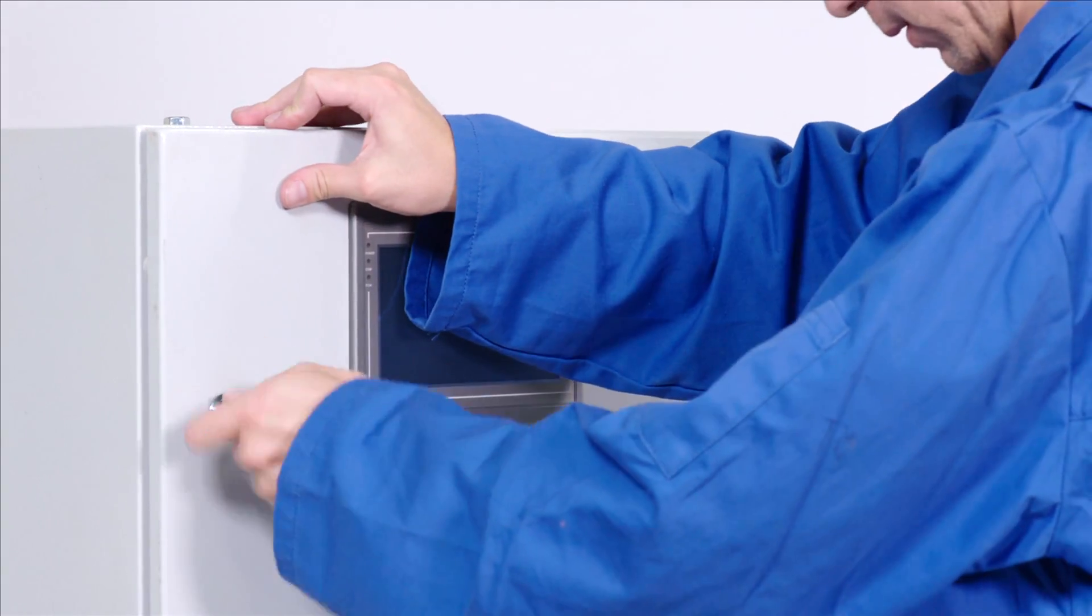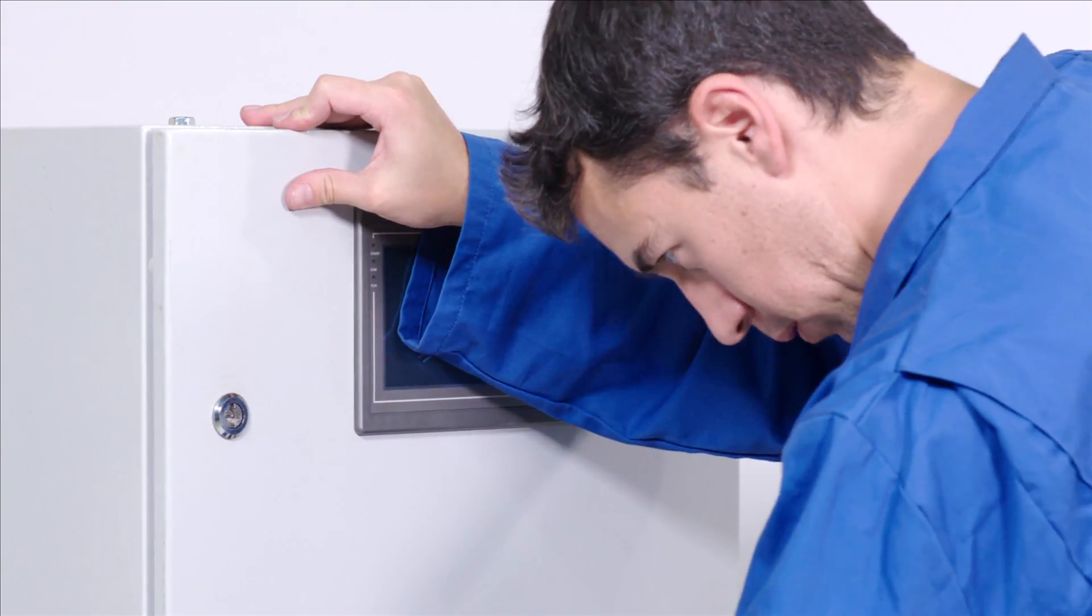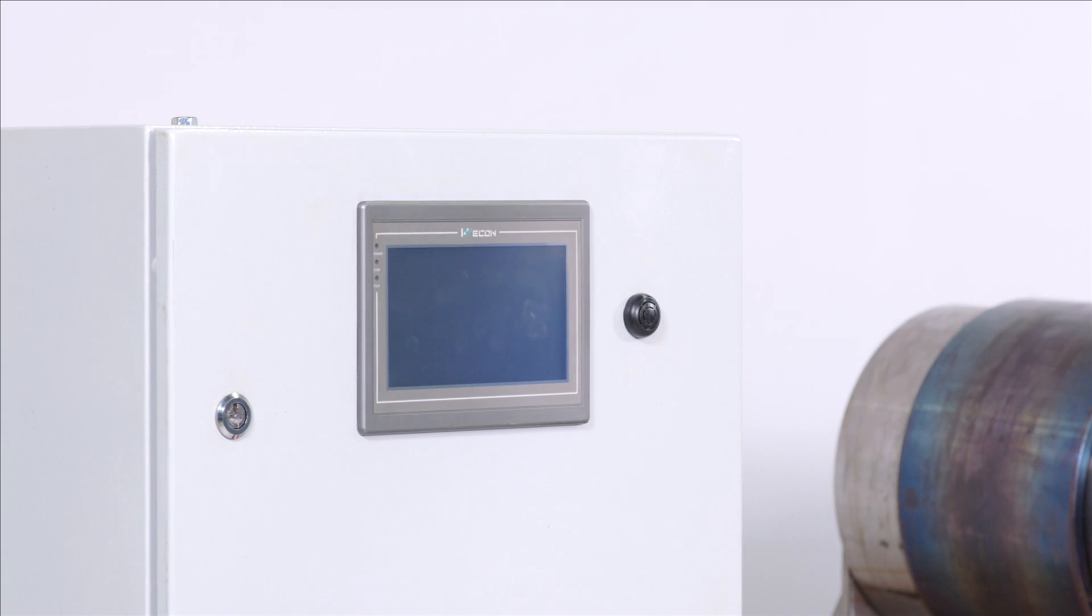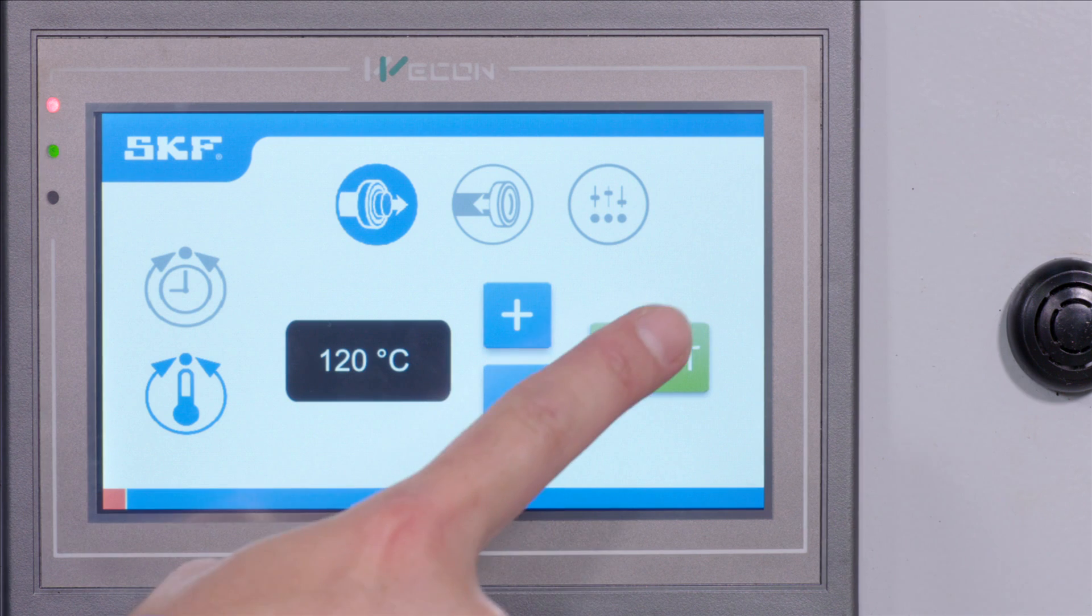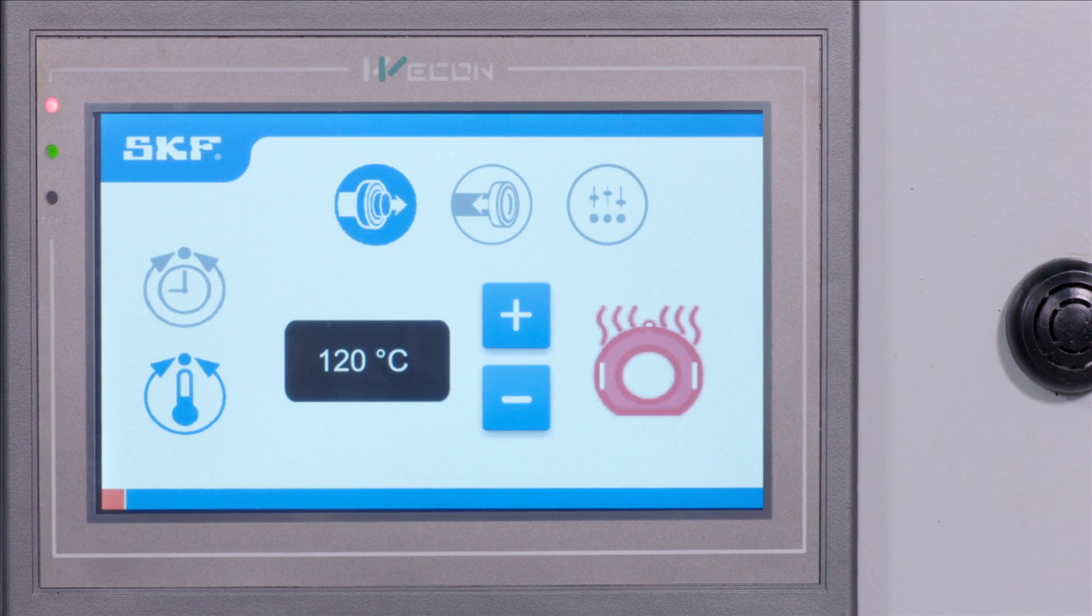EAZ heaters are used with a control cabinet which supplies the right current and voltage to the EAZ coil. This control cabinet must be ordered separately.